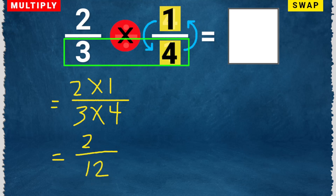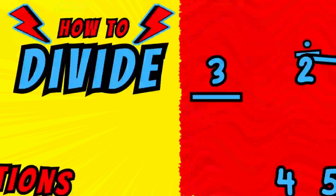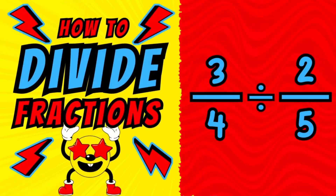This can be simplified by dividing by 2. So 2 divided by 2 is 1, and 12 divided by 2 is 6. So the answer is 1 over 6. Give us a thumbs up if this tutorial helped you. Subscribe to our channel for more step-by-step math tutorials.